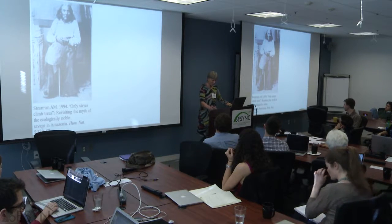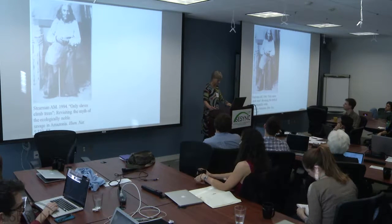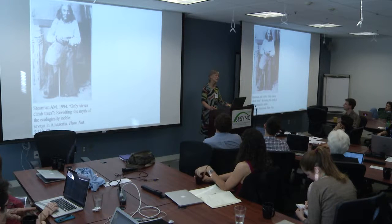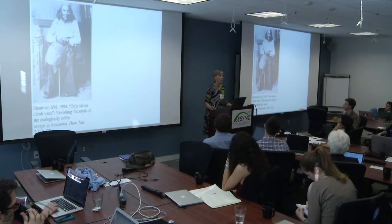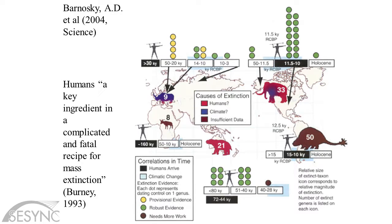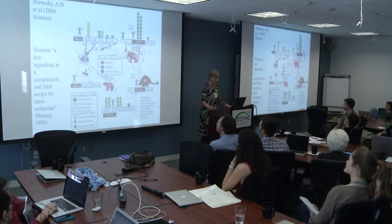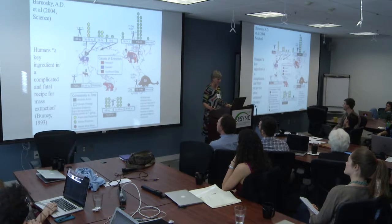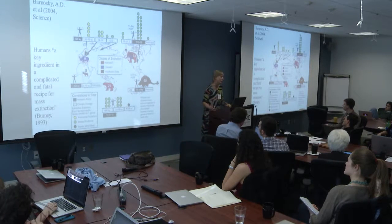This picture is of Chief Seattle—I have him there because he is somebody about whom an enormous amount of mythology has developed. Ali Stearman wrote a really nice paper about the problems of essentializing indigenous peoples with respect to the ecological noble savage idea. In terms of the data, we now have much more evidence than Martin and Mosemann could have had when they developed their model in 1975. A nice paper from around 2004 shows how we understand the role of humans in contributing to mass extinctions in human history.